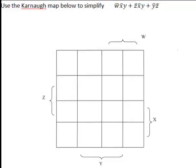Consider the following question. We want to use the Karnaugh map below to simplify the expression w̄x̄y + z̄x̄y + ȳz̄.